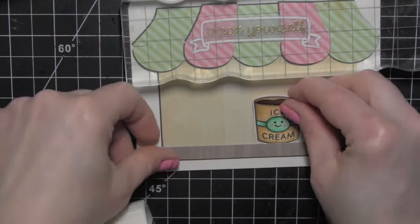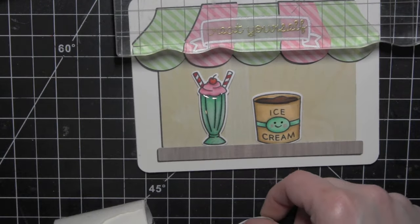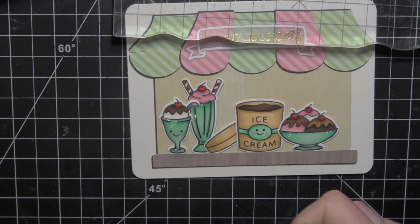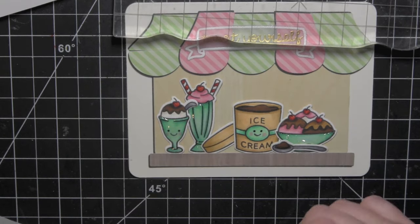I'm going to use some glue dots to adhere all of my elements into that ice cream shop window, making sure to overlap some of the elements and things to really make it look a little bit more realistic.